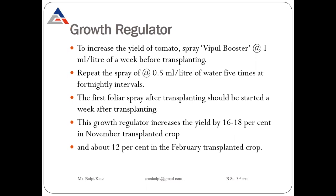There are some growth regulators used to increase the yield of tomato. A growth regulator known as Ripple Booster at the rate of 1 ml per liter of water can be sprayed to increase the yield of tomato. This spray can be repeated five times during the whole cultivation at a fortnightly interval. The first foliar spray should be started one week after transplanting. With the spray of Ripple Booster, the yield of tomatoes can be increased up to 16 to 18 percent.